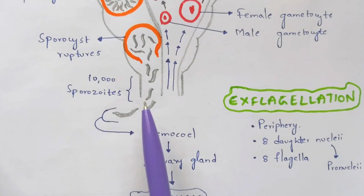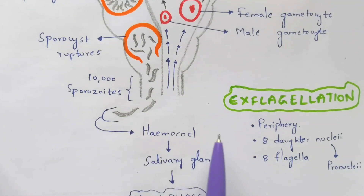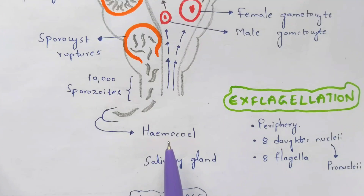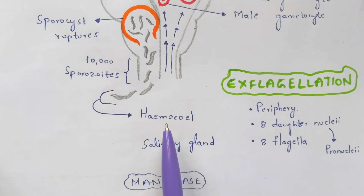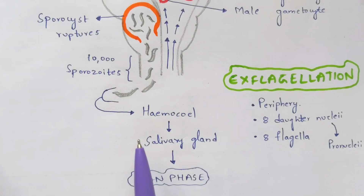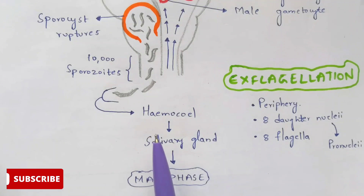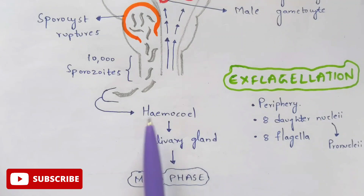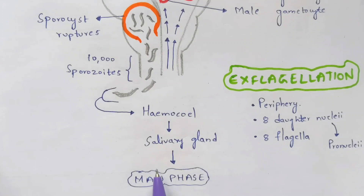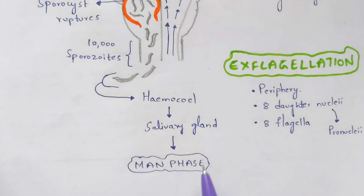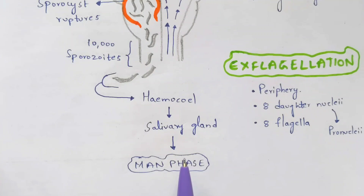All the sporozoids move to the hemocoel of the mosquito — the hemocoel is nothing but the blood of the mosquito. From there they move towards the salivary gland of the mosquito. When this infected mosquito bites a fresh human being who is not affected with malaria, it releases the sporozoids into that person, and Plasmodium vivax in man phase begins in that human being, who then becomes infected with malaria.